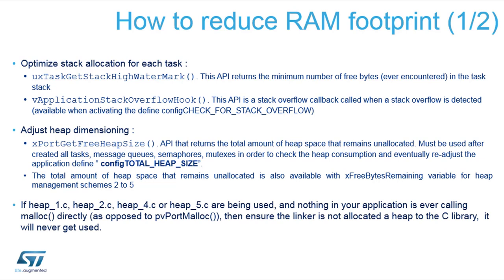It's important to record parameters from a given task if it started with certain values — put them in the trace. Having a log is very important especially in case of errors, because you can learn from them and adapt your application in the next version. Use the ApplicationStackOverflowHook because it can tell you that something really happened. You can also check how much empty space remains in the heap using the function that returns the available free heap size, which is important for monitoring how many objects you can still allocate.